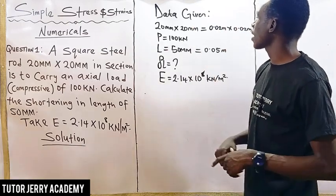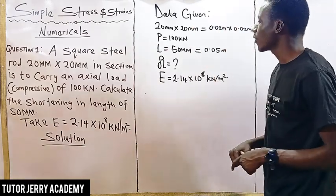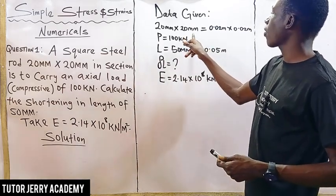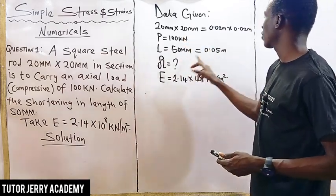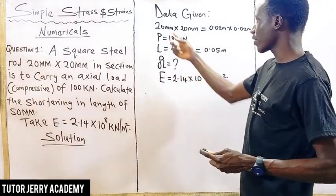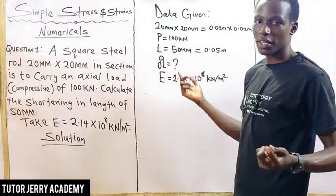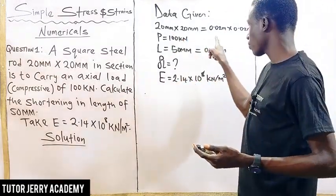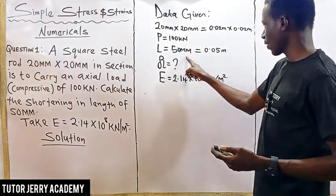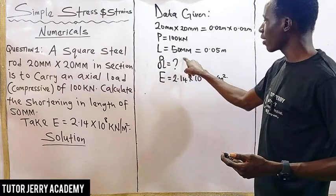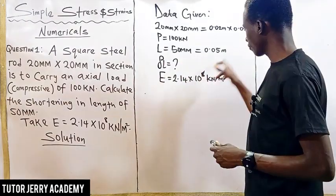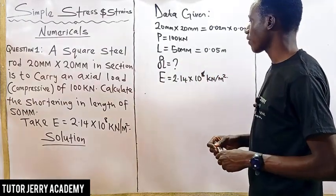This is the data outlined here. If you look here, you can see that I converted our millimeters to meters by dividing by 1000. If I divide 20 by 1000, I get 0.02 meters. And also, 50 divided by 1000 is 0.05 meters.